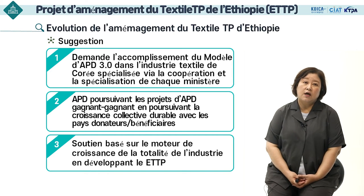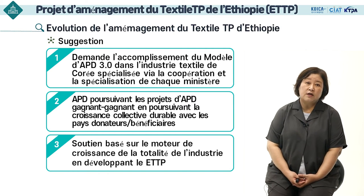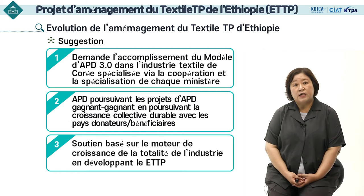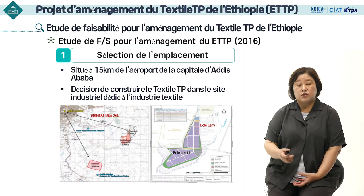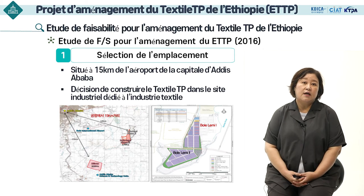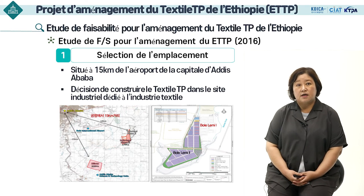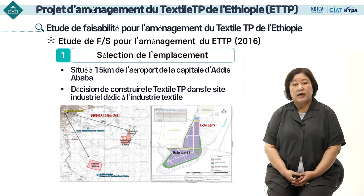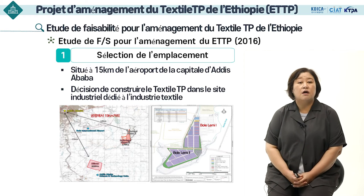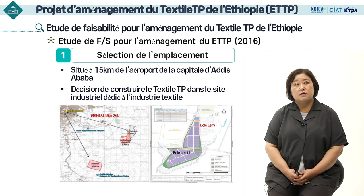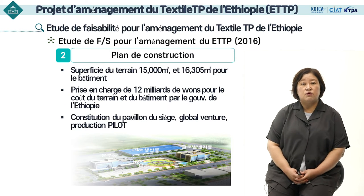La caractéristique de ce projet est de soutenir le textile technoparc de l'Éthiopie en tant que base pour le développement de l'industrie textile. À travers l'étude de faisabilité effectuée en 2016, il y a eu la sélection du site pour le projet. Après avoir recueilli les avis de divers groupes et parties prenantes en Éthiopie, il a été décidé de construire le textile technoparc dans le site industriel textile de Bolelemi situé à 15 km de l'aéroport d'Addis-Abeba.